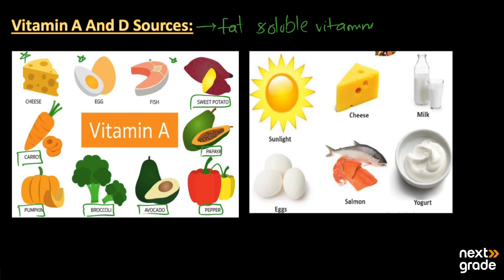Vitamin A has a lot of sources that we already take in our daily life. We take eggs on a daily basis; we have potatoes in different forms — as fries, boiled potatoes, or mashed potatoes. We also use cheese in different ready-made things like burgers and pizzas. Carrot can be taken in uncooked or cooked form — it is a great source of Vitamin A that helps to increase the vision of human beings.